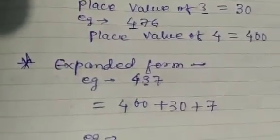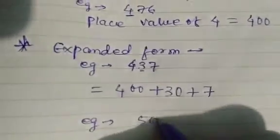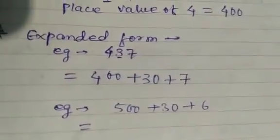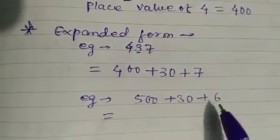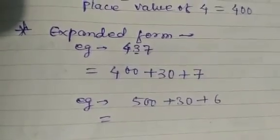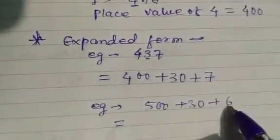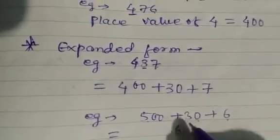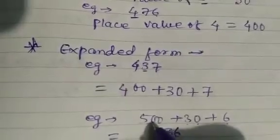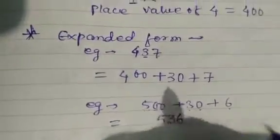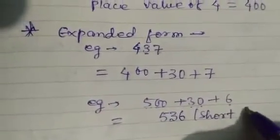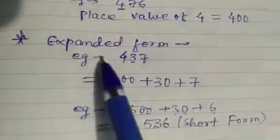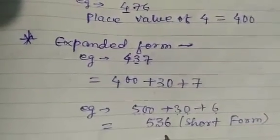Now, how can we write the short form? If the expanded form is 500 + 30 + 6, we collect the numbers of each place digit and write them together. The ones digit is 6, the tens digit is 3, and the hundreds digit is 5. So we write together: 536. From the expanded form we can write the short form.